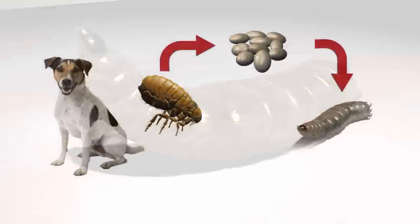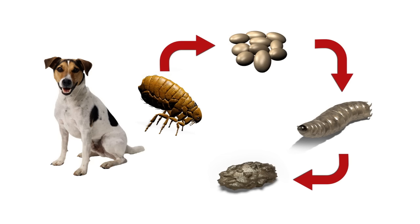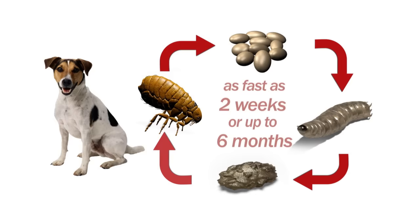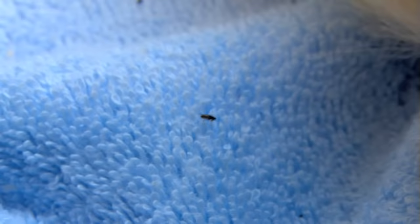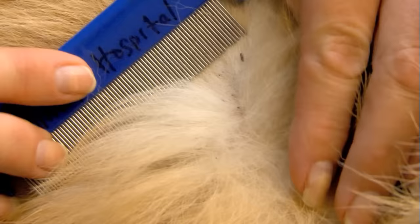If an adequate supply of food is available, larvae will complete their development in 5 to 10 days and spin a silk-like cocoon in which they molt to the pupa stage. The final transformation to the adult flea occurs within the cocoon, and the newly formed adult flea emerges when properly stimulated by heat, carbon dioxide, and other environmental stimuli which might indicate an available food source in the area. The entire cycle from egg to adult can take as little as 2 weeks or as long as 6 months depending on environmental conditions. The adult flea is probably the only stage of the flea's life cycle you're likely to observe, as the other stages are generally very difficult to see without magnification.